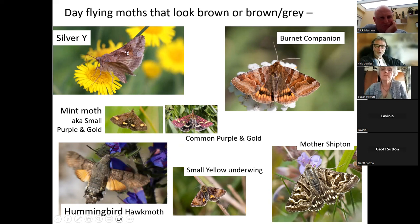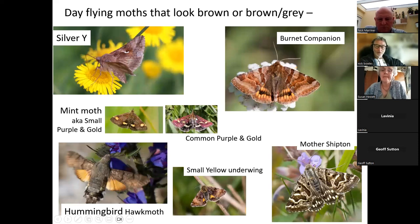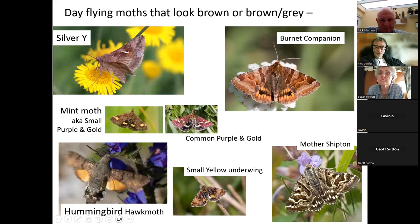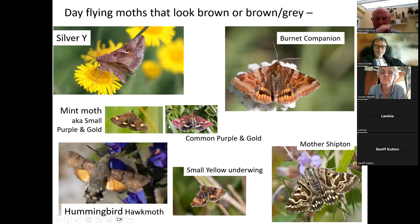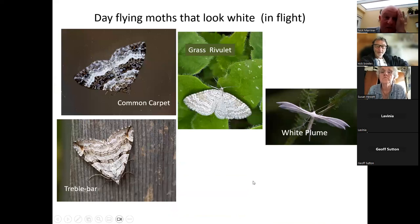Other day-flying moths include the mint moth or small purple and gold, and the common purple and gold — a really pretty moth. The hummingbird hawk-moth is a bigger moth that many will have seen, and one has already been seen this year. The small yellow underwing is like a half-sized version of the burnet companion. None of the purple and golds or the small yellow underwing would be mistaken for butterflies as they're too small.